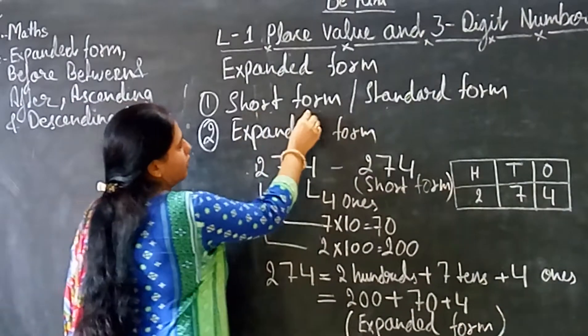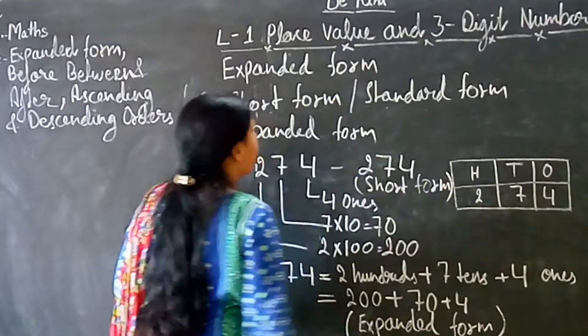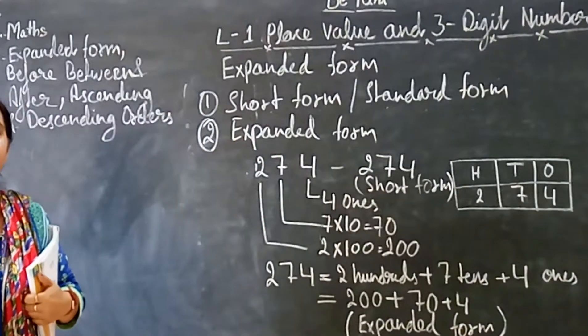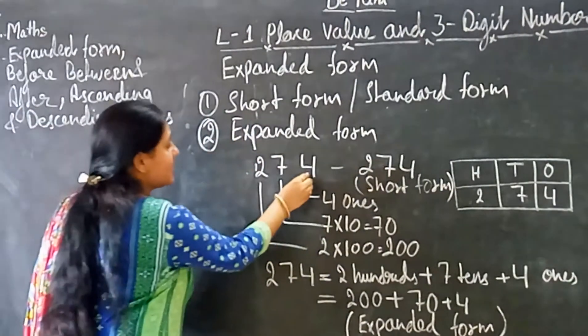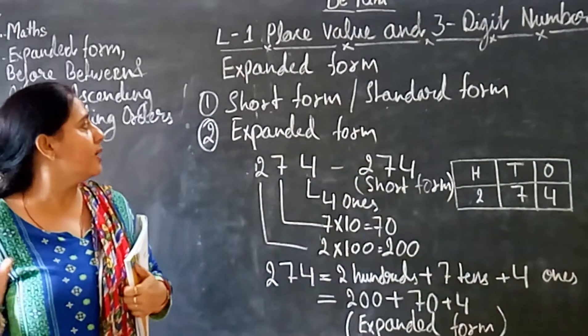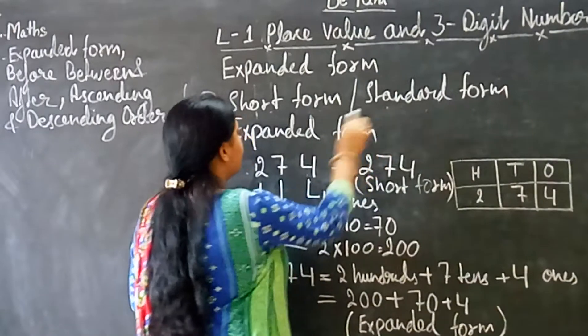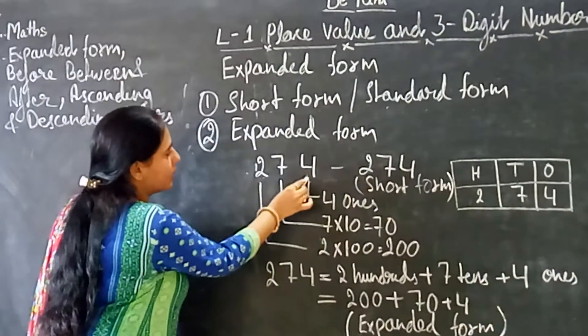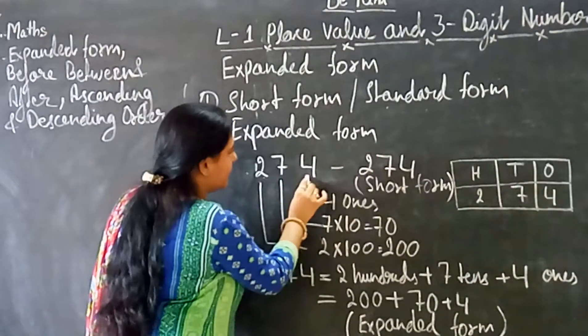So, first we are talking about short form and standard form. What do we write here? Just face values of the number in exact place. In standard form, the number has its face values exactly in the same place.